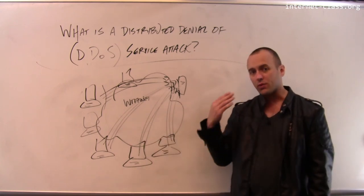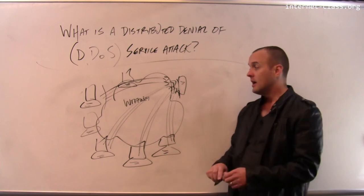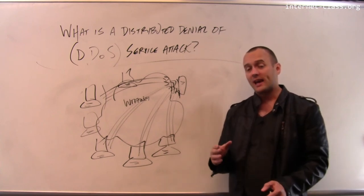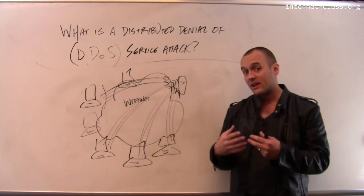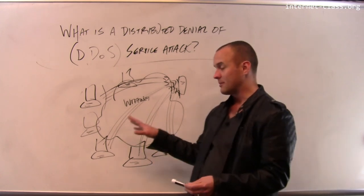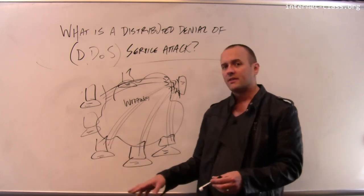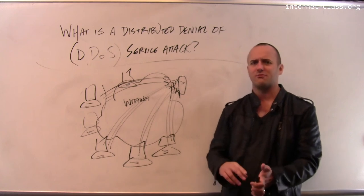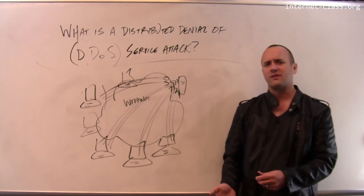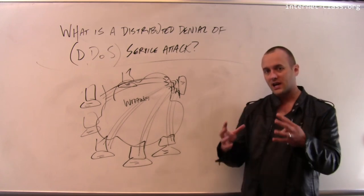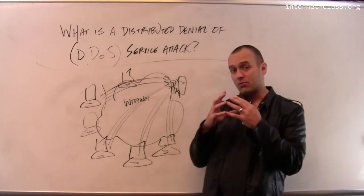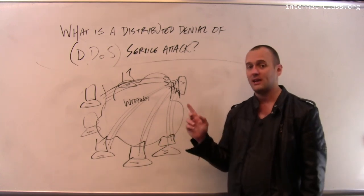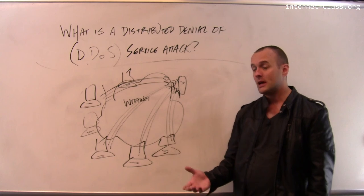There was actually a recent attack just a few days ago that was one of the first times hackers used access to Internet of Things devices — not actual computers, but internet-connected toasters, refrigerators, home security systems, and other internet-connected peripherals — to launch this kind of attack. That was one of the first times that happened.